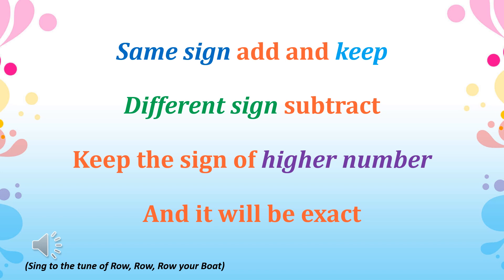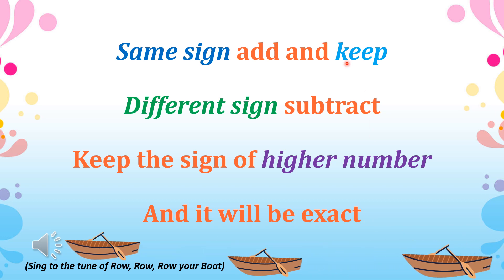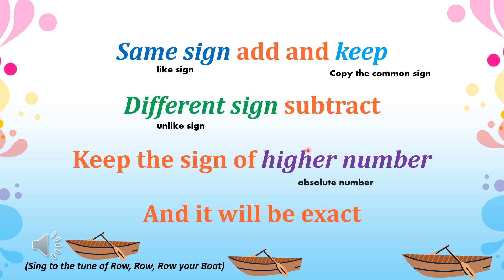I am going to teach you a song for you not to forget the rules in adding integers. Just sing this song to the tune of Row, Row, Row Your Boat. Same sign, add and keep, different signs subtract. Keep the sign of higher number and it will be exact. So same sign means like signs — you add and keep, meaning you copy the common sign. Different sign means unlike sign, so you subtract. Keep the sign of the higher number, meaning the greater absolute value, and your answer will be exact.